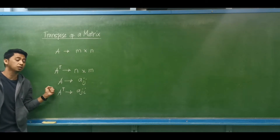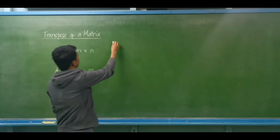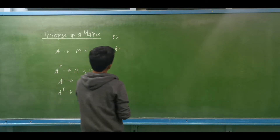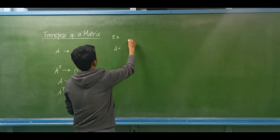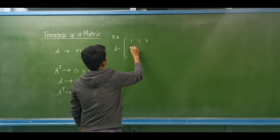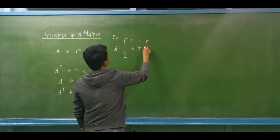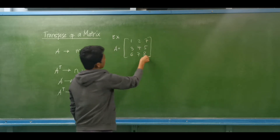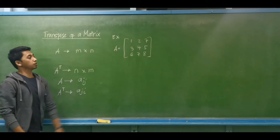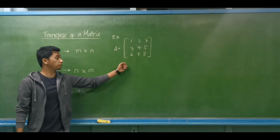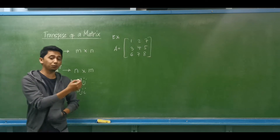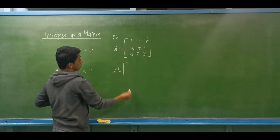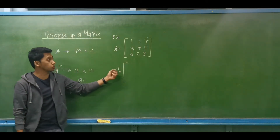For example, we have matrix A with elements 1, 2, 7, 3, 4, 5, 6, 7, 8. We are required to determine the transpose of matrix A. All we have to do is interchange rows and columns.